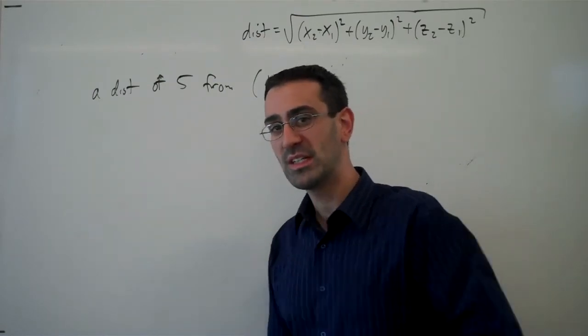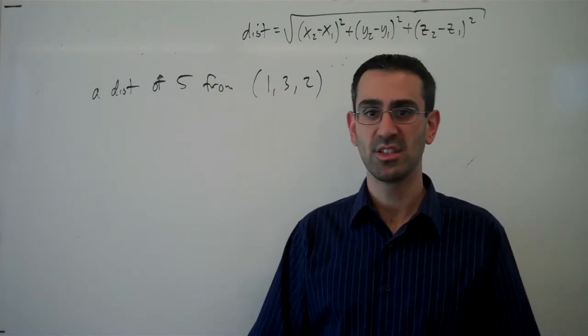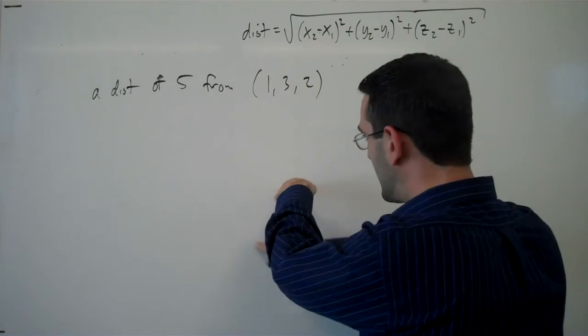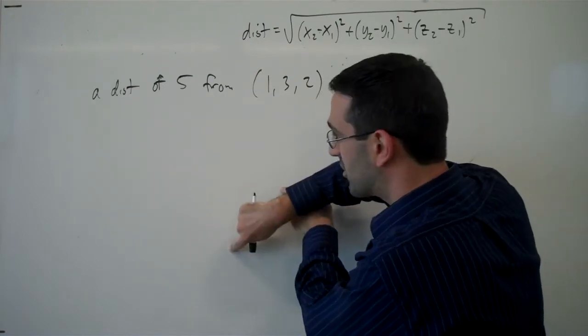This may sound familiar. Earlier, we did something similar in two dimensions that gave us a circle because we had a point. All the points in equal distance away formed a circle.